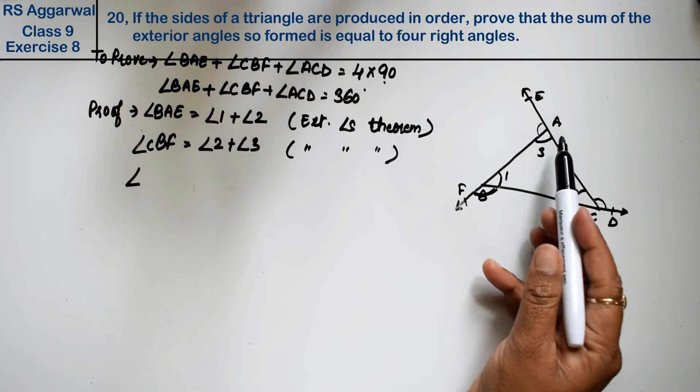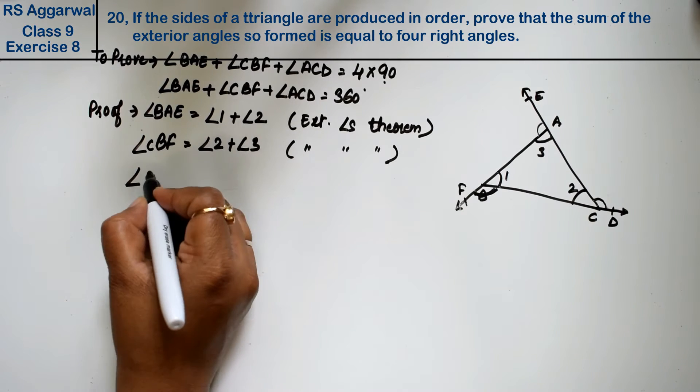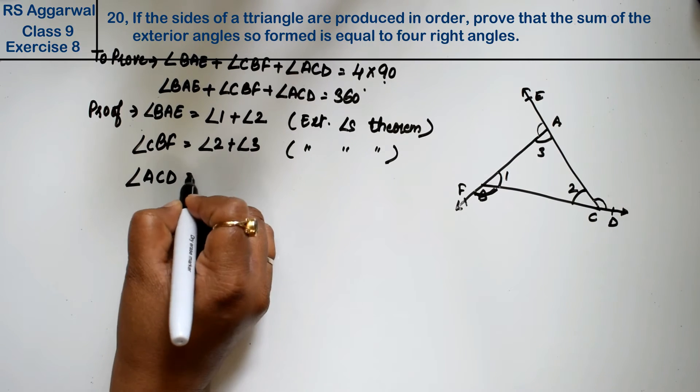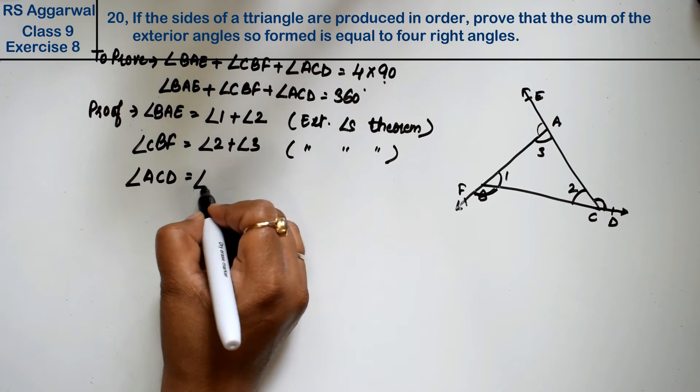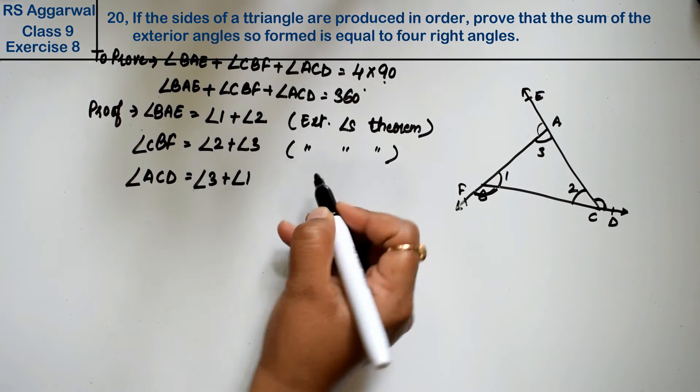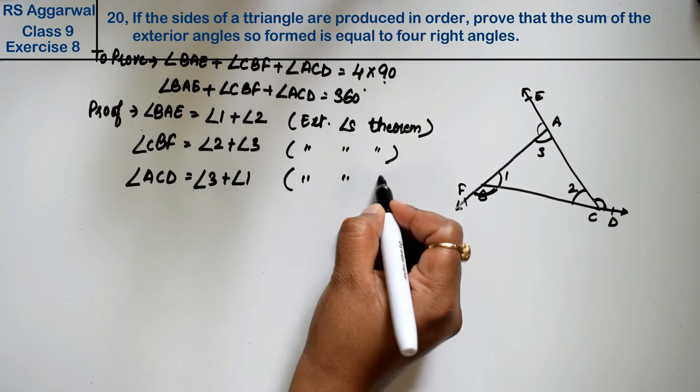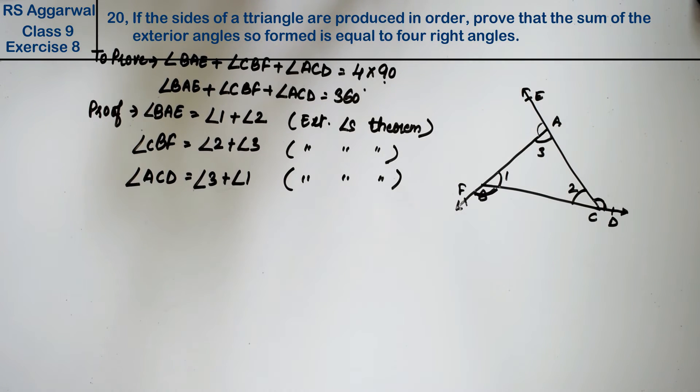Now this angle is done. Angle ACD, this angle is formed by which angles? Angle 3 and angle 1. Because this is the exterior angle theorem.